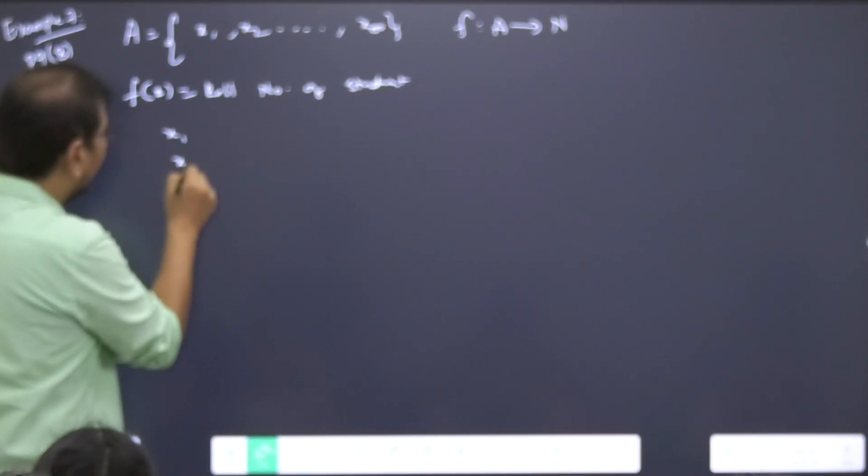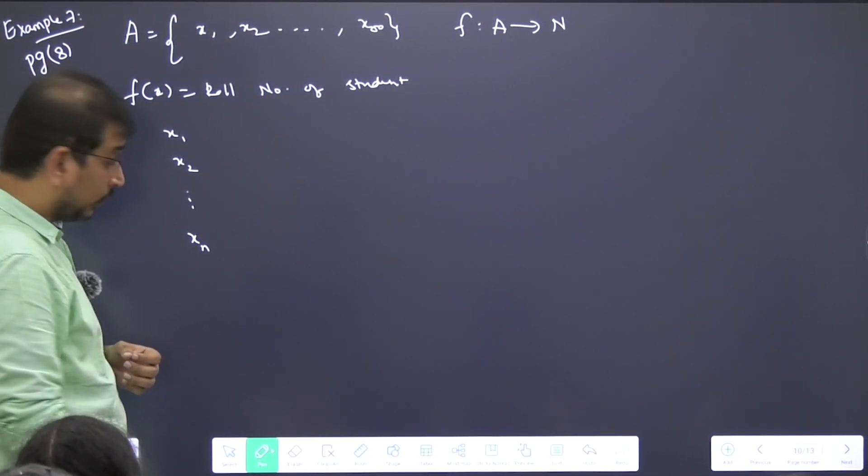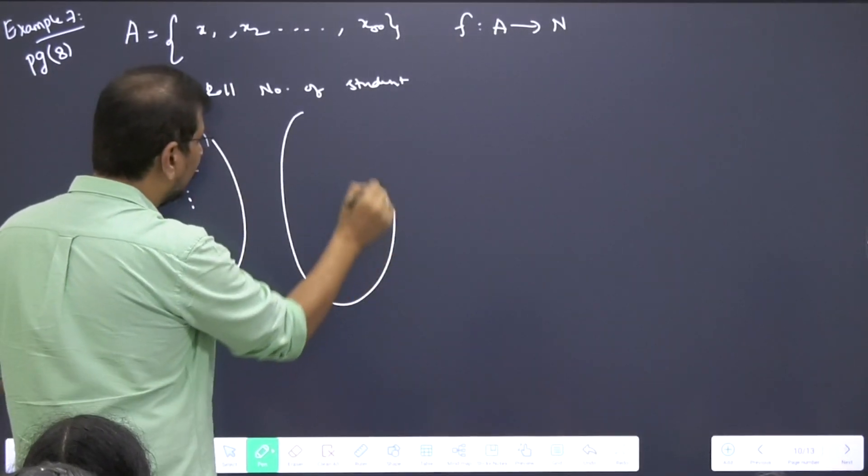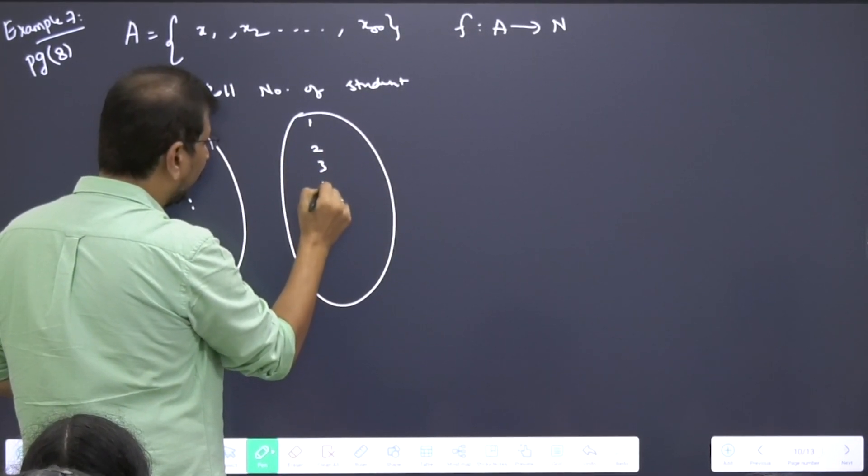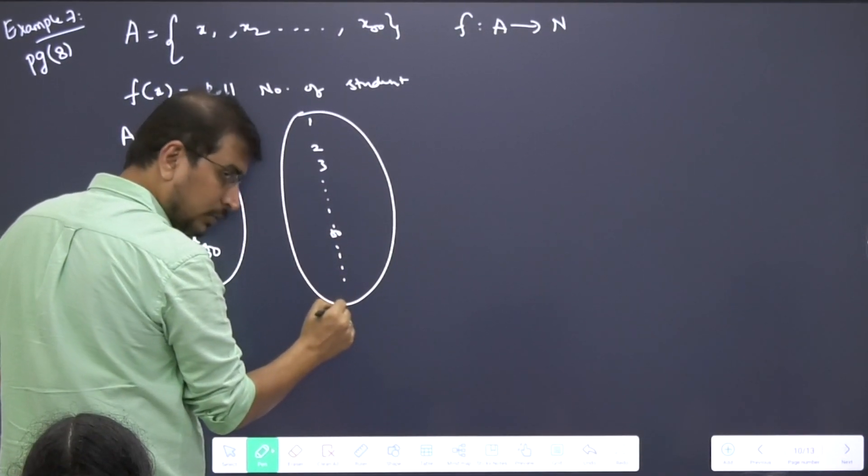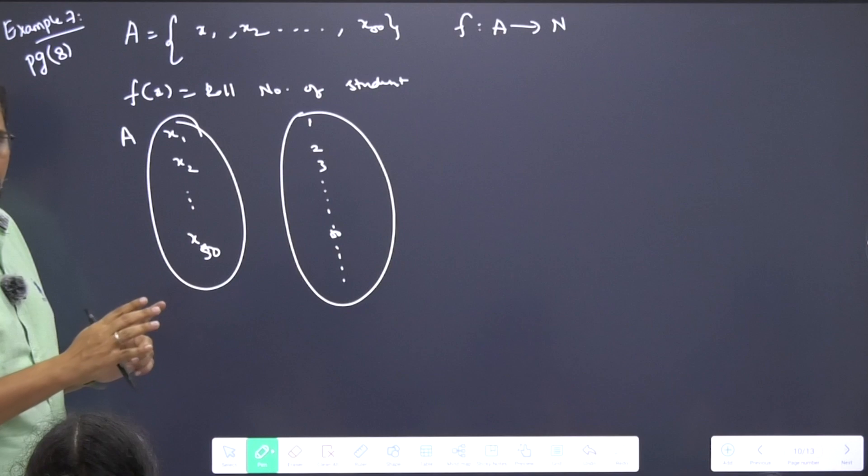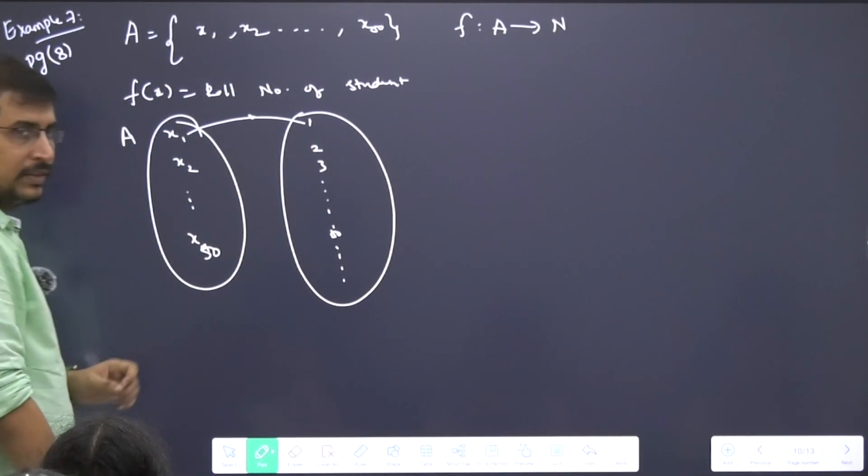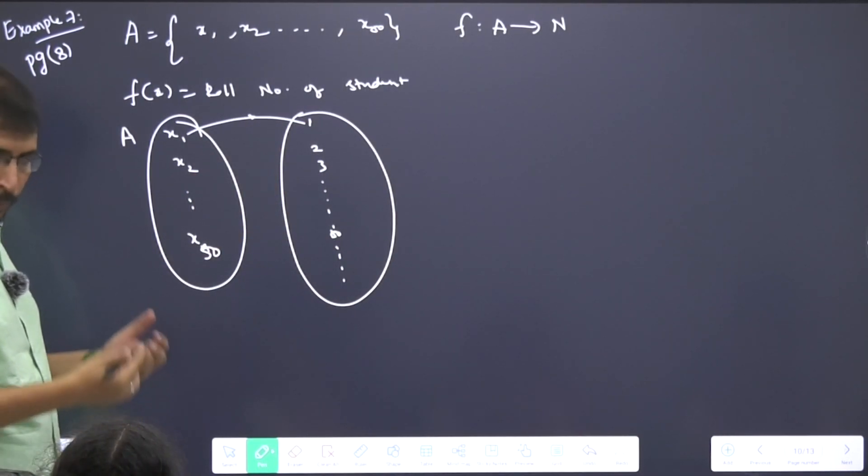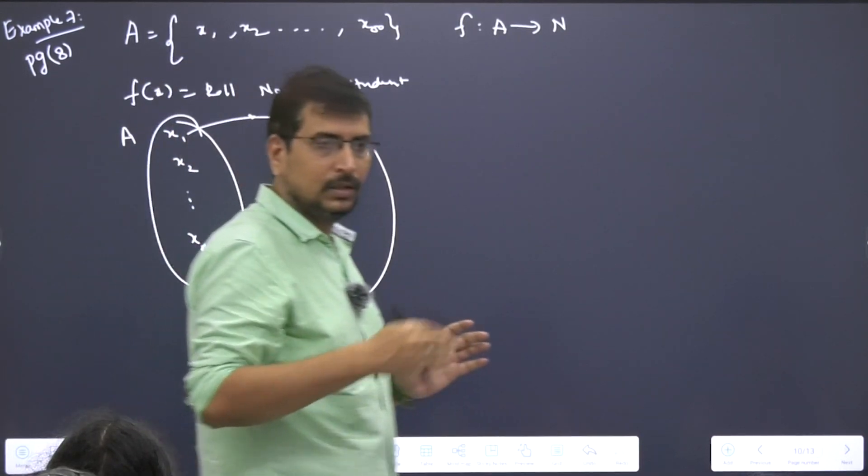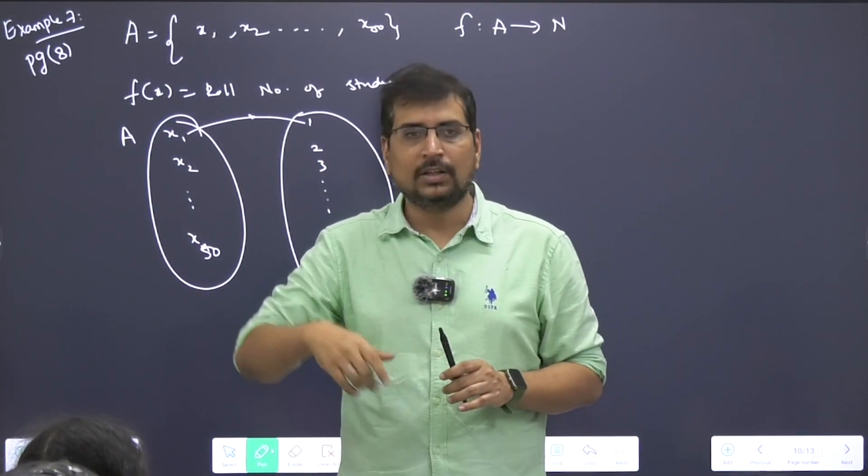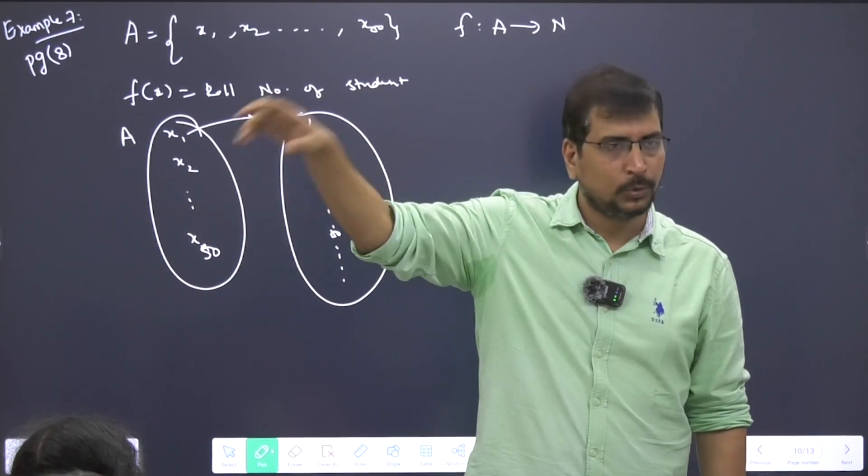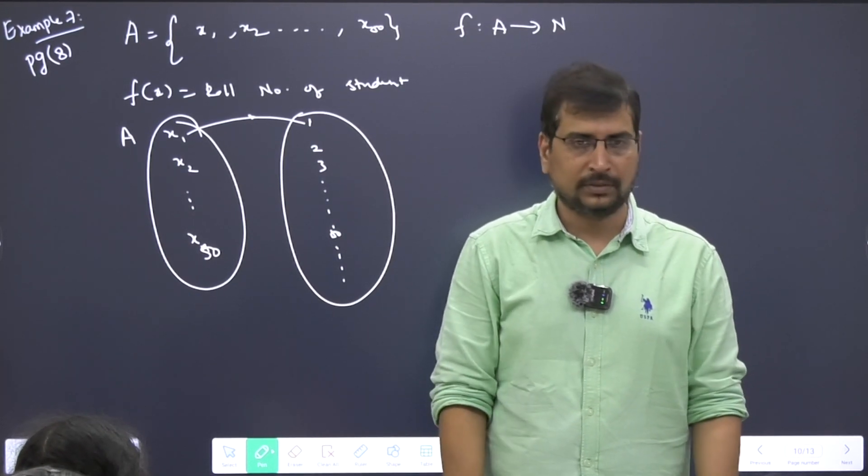It's a one-to-one function because you have x1, x2, so on till x50 - you have 50 students in set A - and on the other side you have the natural number set: 1, 2, 3, so on. If x1 has the roll number 1, the same x1 cannot have another roll number. Each person in the list is going to have a unique roll number associated.